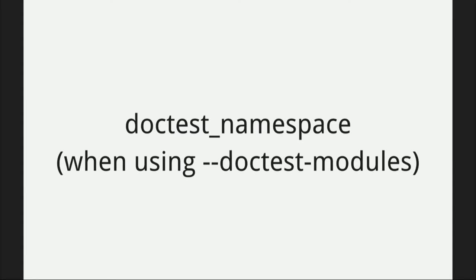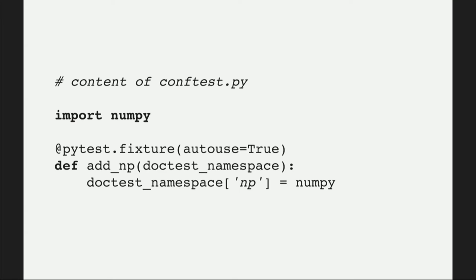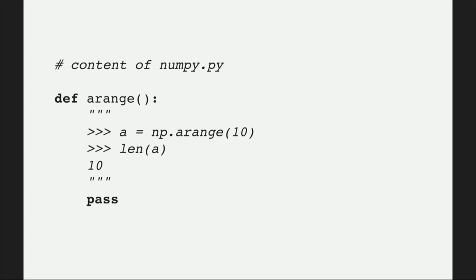There is a new thing called Doctest Namespace. It's a fixture, and you can add abbreviations to it by filling a dictionary. In the NumPy codebase, for example, there's a convention of using NP as an abbreviation. You can use the Doctest Namespace and say NP now points to the module called NumPy. If you then have a doctest and run it via --doctest-modules, it will work out of the box when you use this fixture with auto-use.